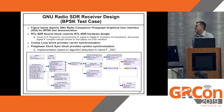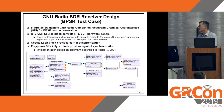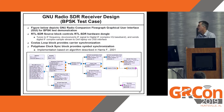The BPSK test case flow graph — the GNU Radio flow graph for BPSK. On the left is the RTL-SDR source block that controls the dongle. The other main blocks are the polyphase clock sync block that does symbol synchronization, and the Costas loop that does carrier synchronization. The other blocks are support blocks, which I'll show on the next chart.